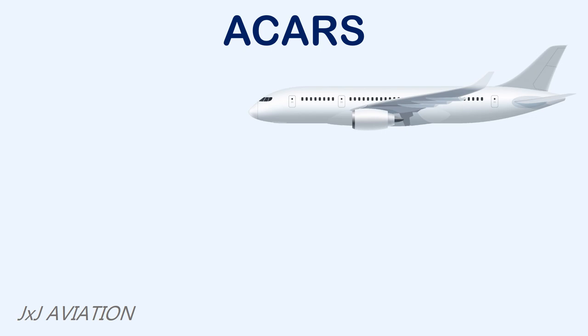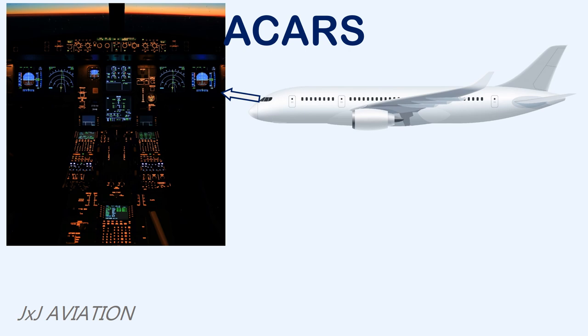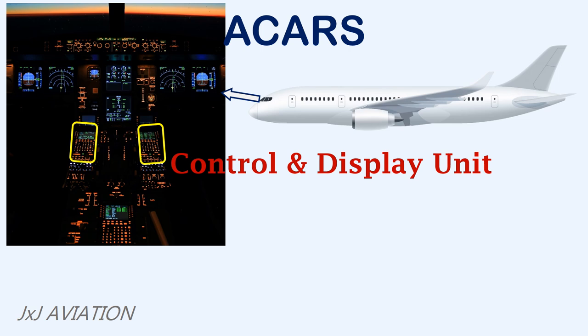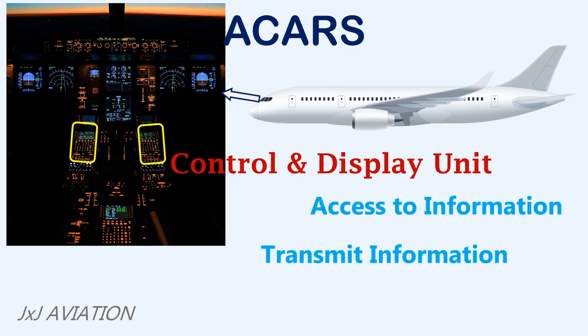In the cockpit, the crew can manage and monitor the data that is sent on the ACARS with the help of the control and display unit, or CDU. The CDU is the only unit which provides an interface to the crew for sending information or receiving data. So the CDU provides access to information, transmits information automatically or manually if required, and also has a provision for sending text messages to the ground control.